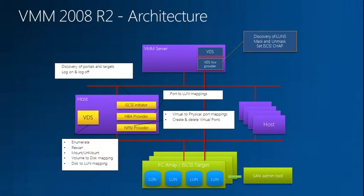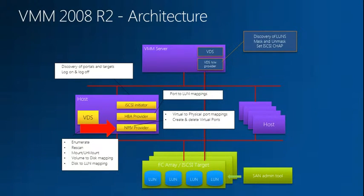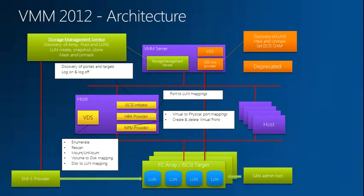We then go into the FCHBI APIs and get information like discover target endpoints, worldwide name, and worldwide port name for the actual HBAs. In the case you have an NPIV-enabled HBA, we actually get the V-ports. NPIV — N-Port ID Virtualization — is the ability to multiplex an HBA with multiple worldwide port names. We're able to get all those virtual ports and bring that back into VMM, enabling us to tell you that this VM can be transferred from one location to another without ever transferring over the network. That investment continues in 2012, where the architecture changes with a new service called the Storage Management Service, which gives us access to SMIS providers.